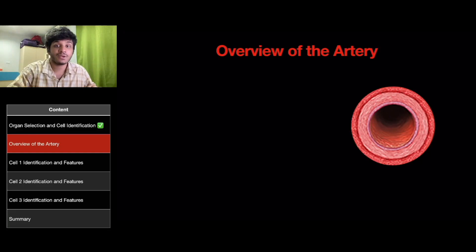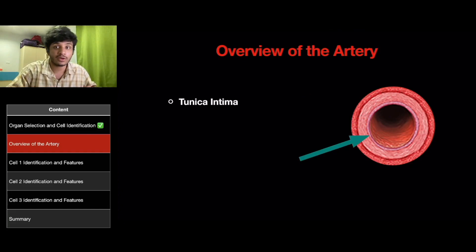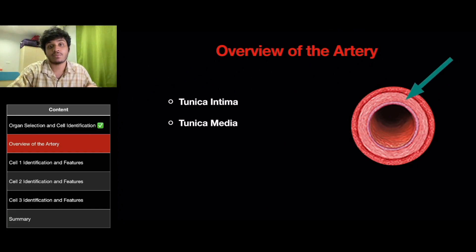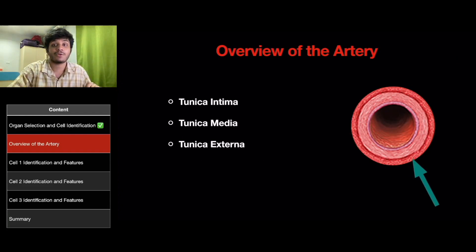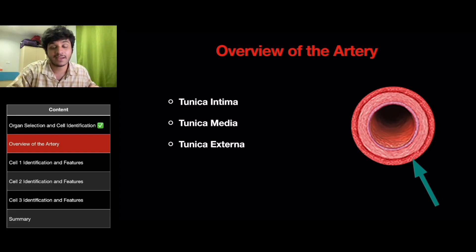The arteries have three layers. The first and innermost layer is the tunica intima, as shown by the arrow here. The middle layer is the tunica media, as shown by the arrow here, and the outermost layer is the tunica externa, as shown by the arrow here. We will be identifying three cells from the tunica intima and the tunica media.